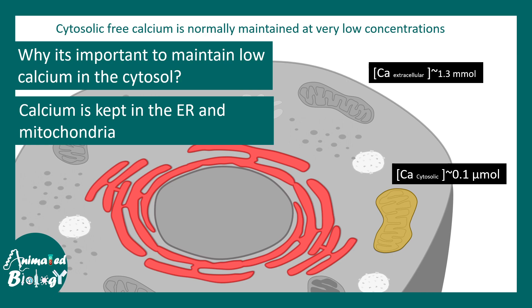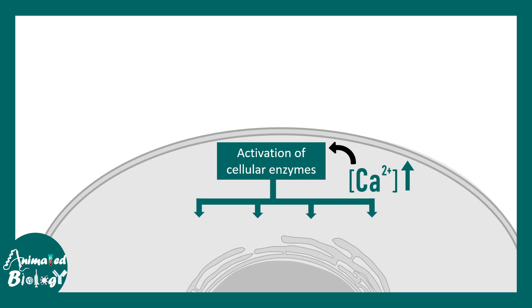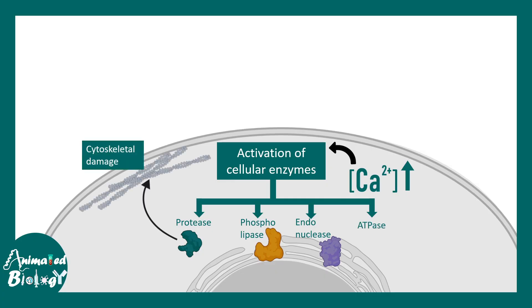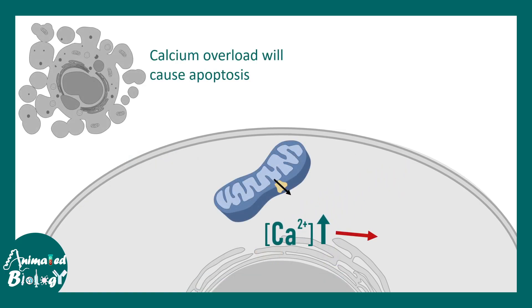When cytosolic calcium increases, several enzymes get activated: proteases, phospholipases, endonucleases, and ATPases. Each has a detrimental function — proteases cleave cytoskeletal elements, phospholipases cause membrane damage, endonucleases chop off nucleic acid materials in the nucleus, and ATPases lead to further ATP depletion, creating a massive toxic scenario inside the cell.